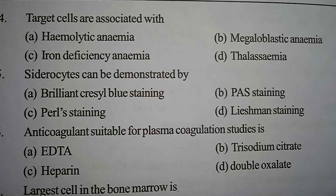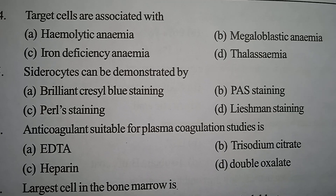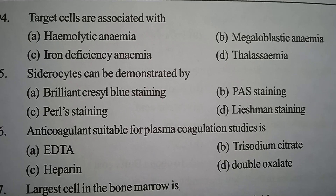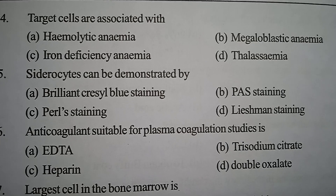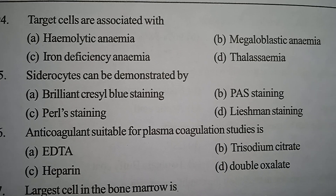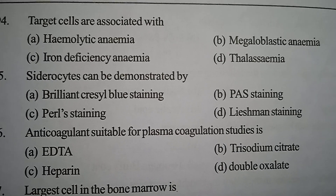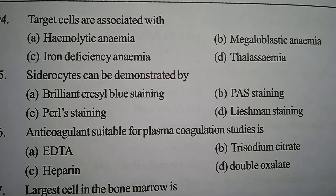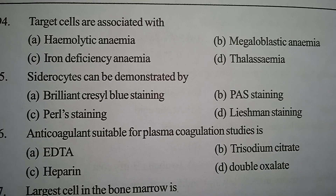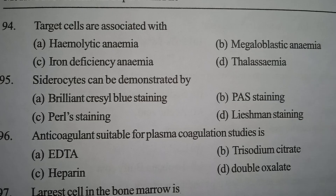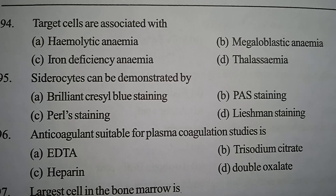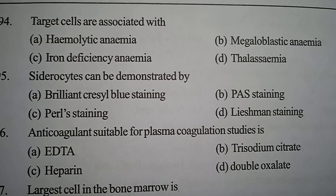Next one: siderocytes can be demonstrated by — Option A: brilliant cresyl blue staining. Option B: PAS staining. Option C: Perl's staining. Option D: Leishman staining. Correct answer: Option C, Perl's staining.